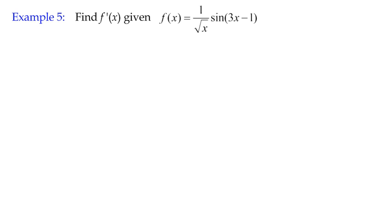In this example here, it says find f prime x given f of x equals 1 over root x, that's term 1, and sine 3x minus 1. That's the other, multiplying together, so it's a good candidate for the product rule.